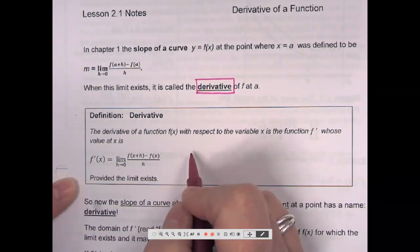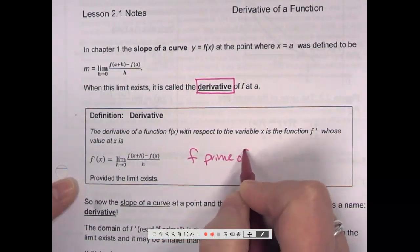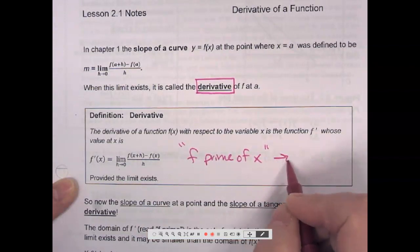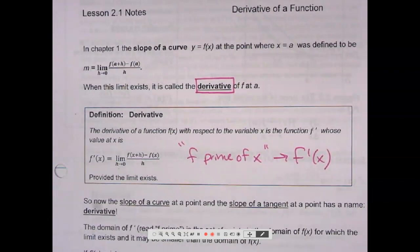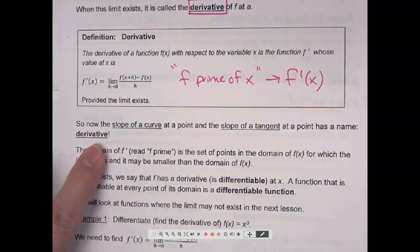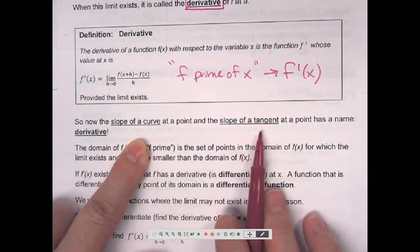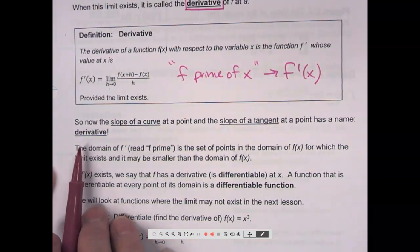Yes, it's fine to use a. Yes, it's fine to use x. It doesn't matter. Those variables are interchangeable. But I like the x better because we're using the x. So this is red, f prime of x. And that means the derivative. So now the slope of a curve at a point and the slope of a tangent at a point has a name and that name is called derivative.